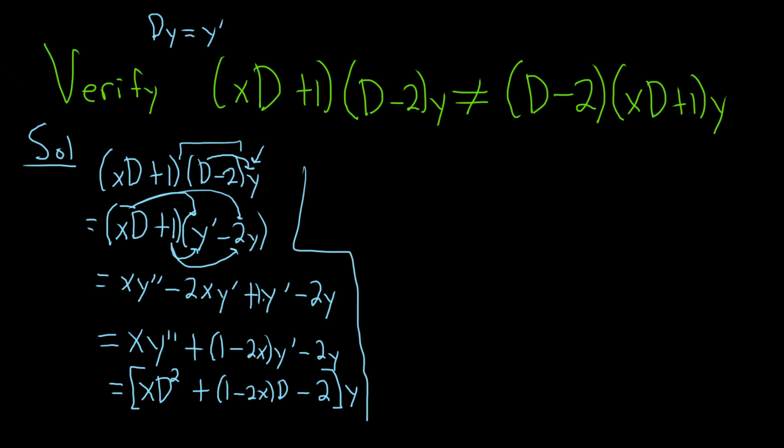All right. So now let's work out the right-hand side. It's a little bit trickier, I think. So D minus 2. Then we have xD plus 1. And we're applying this to y. Let's focus on this piece first. So we still have D minus 2.